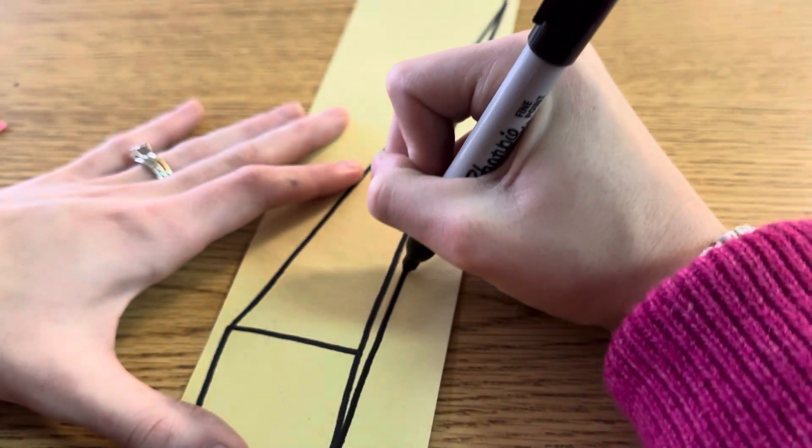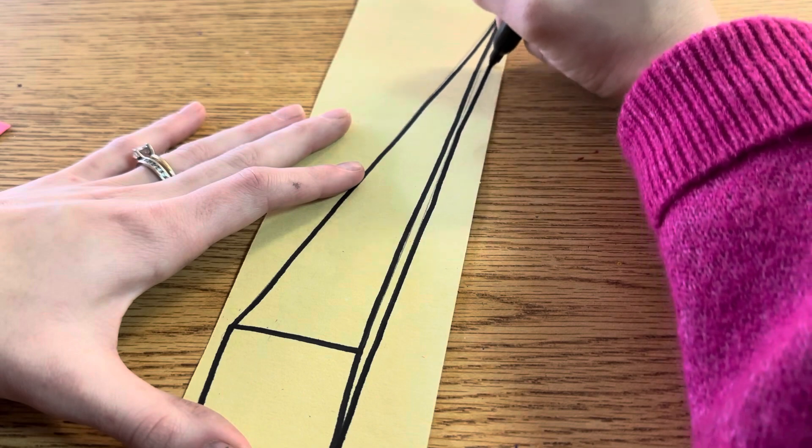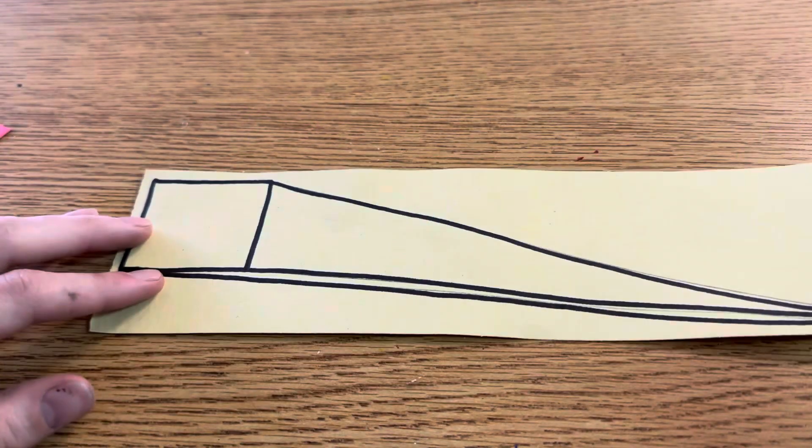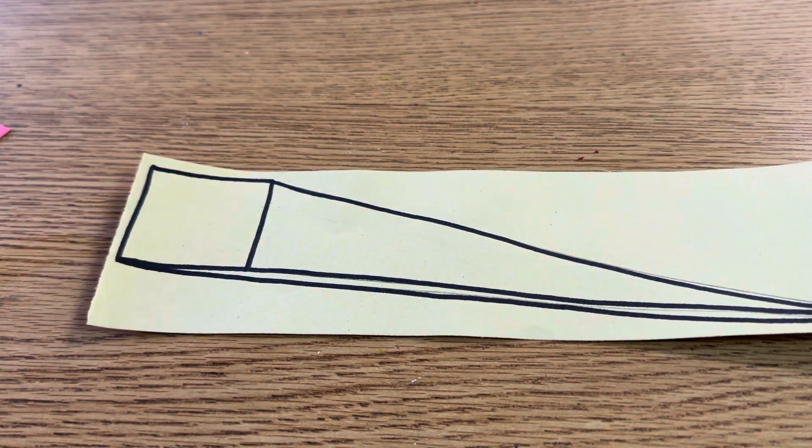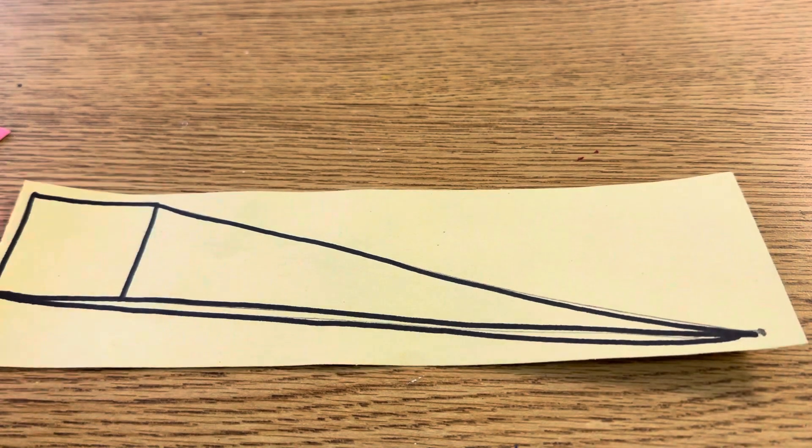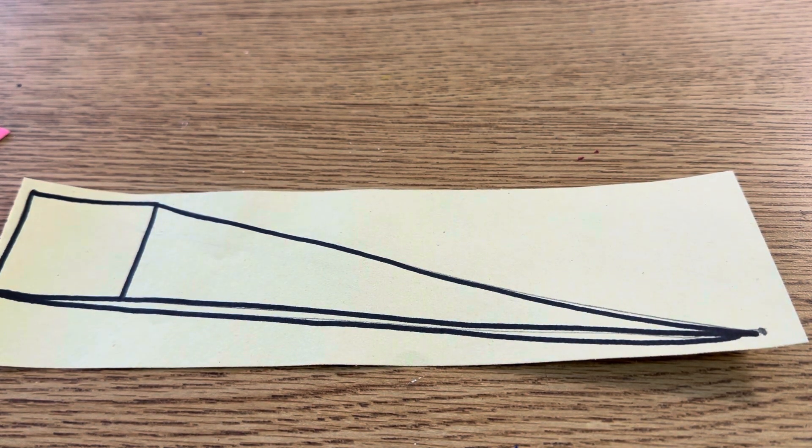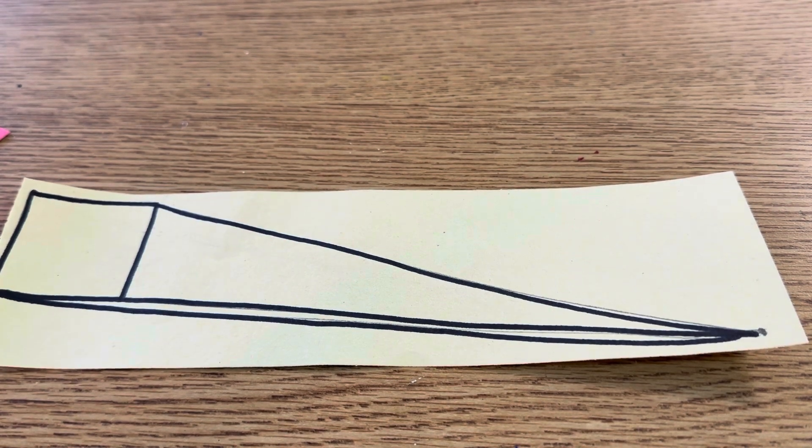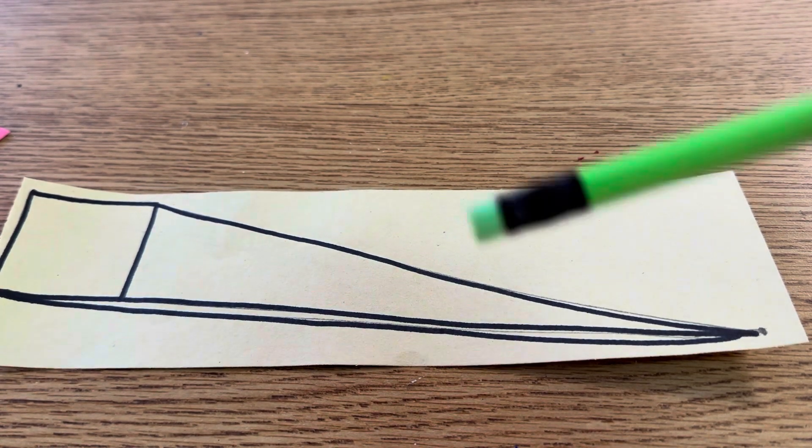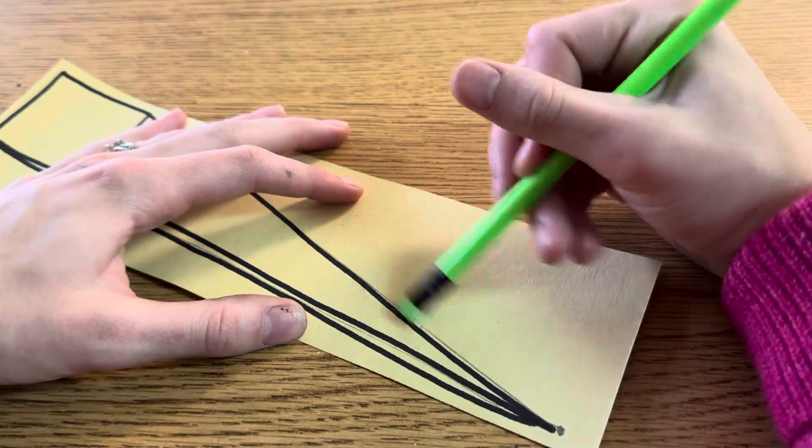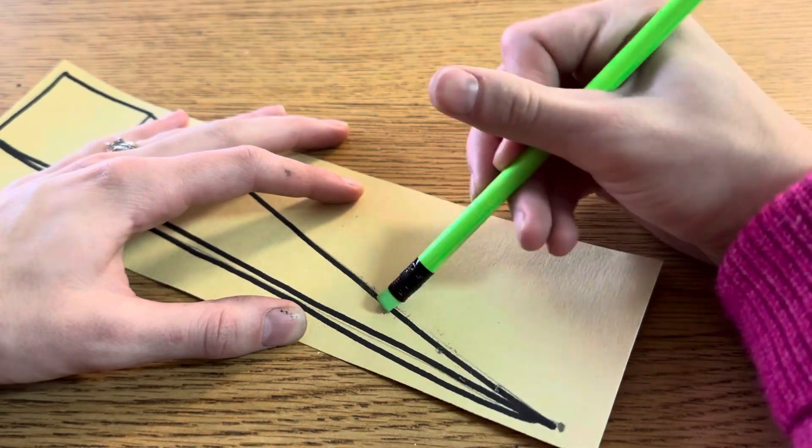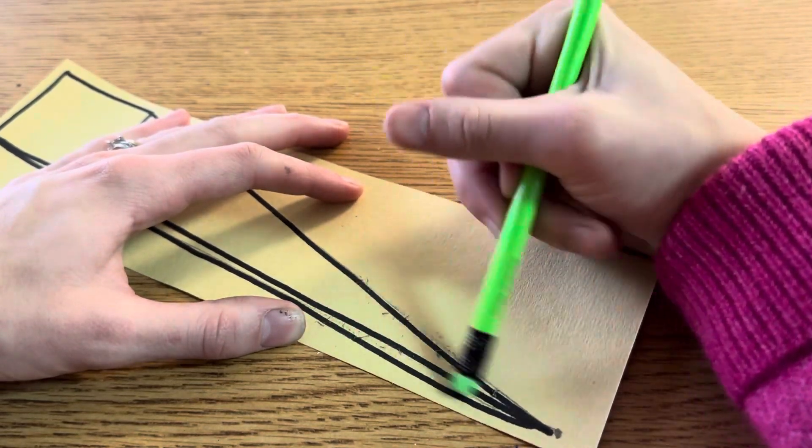You're going to do that for every shape. And then I notice right here I didn't go directly on my line, so what I could do is grab my eraser and I'll just lightly erase those pencil marks.